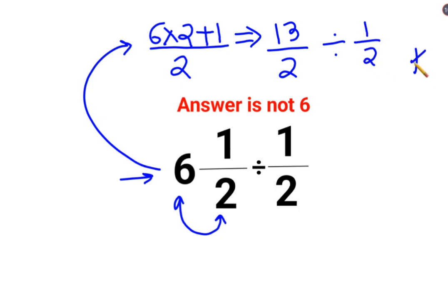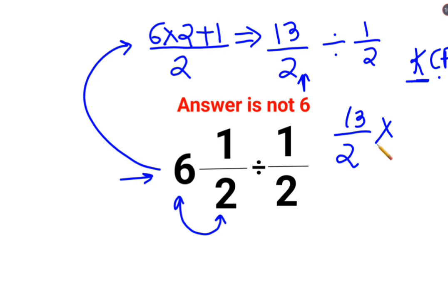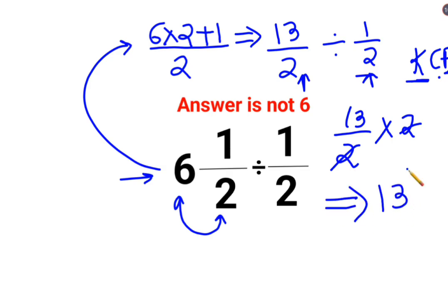In order to do division, we follow the rule of KCF. K stands for keeping the first fraction as it is. C stands for changing the division sign to multiplication. F stands for flipping, or taking the reciprocal of the next fraction, which is 1/2 — so the reciprocal is 2. The 2s cancel, and the answer is 13.